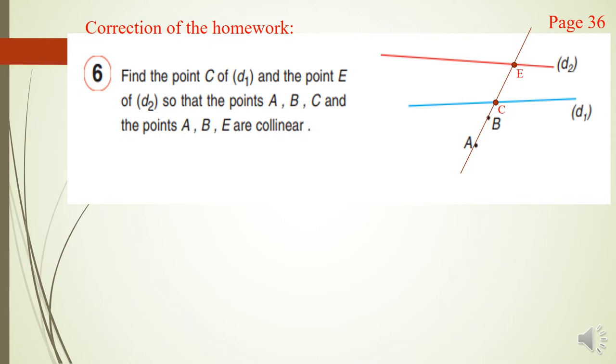ABC are collinear and ABE are collinear also. And don't forget, C is on D1 and E is on D2.